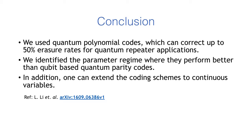In conclusion, we use quantum polynomial codes which can correct up to 50 percent erasure rates for quantum repeater applications. We identify the parameter regime where they perform better than qubit based quantum parity codes. In addition, one can extend the coding schemes to continuous variables. Thank you very much.